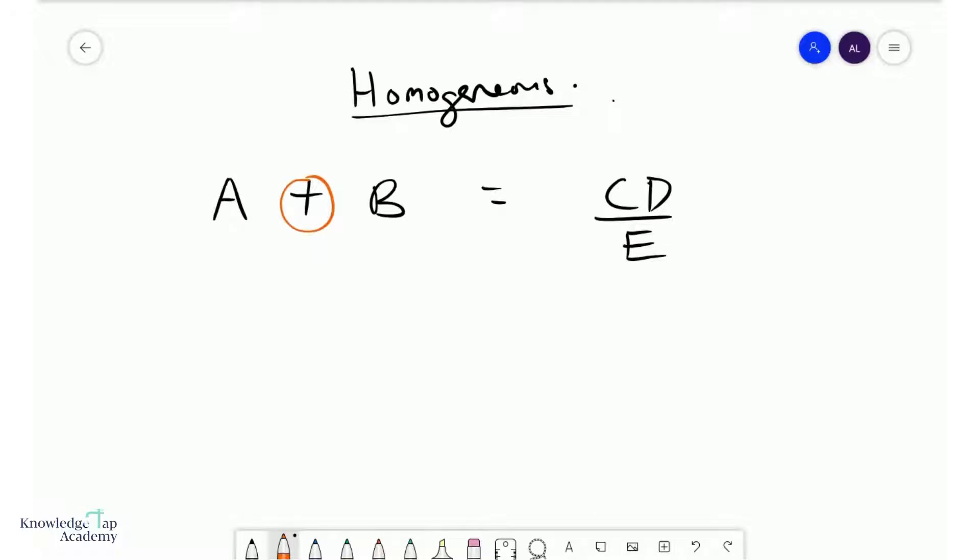If I'm adding something, or for that matter, if I'm subtracting something, then it follows that these two, A and B, must have the same units. Same units, all right? Both of these guys must have the same units.